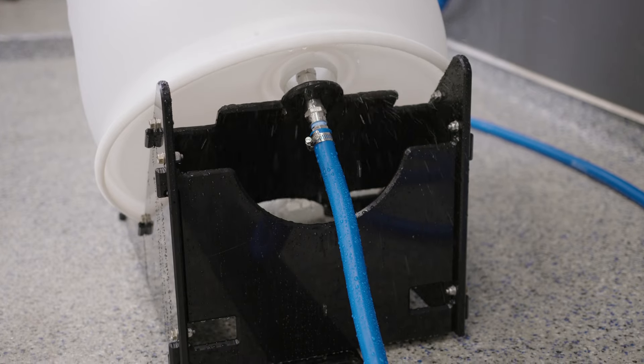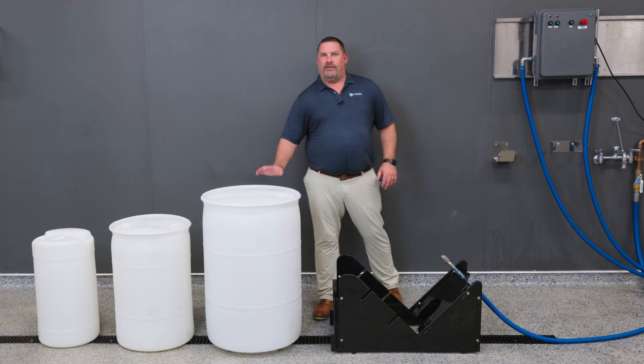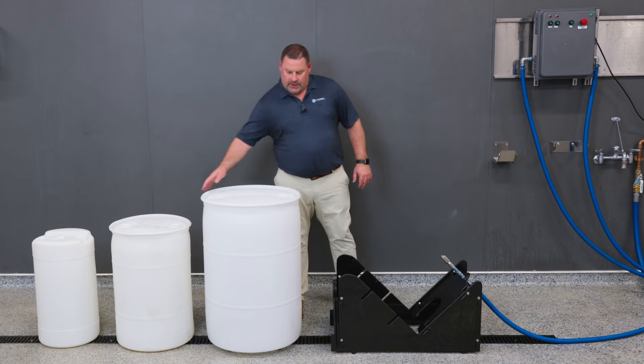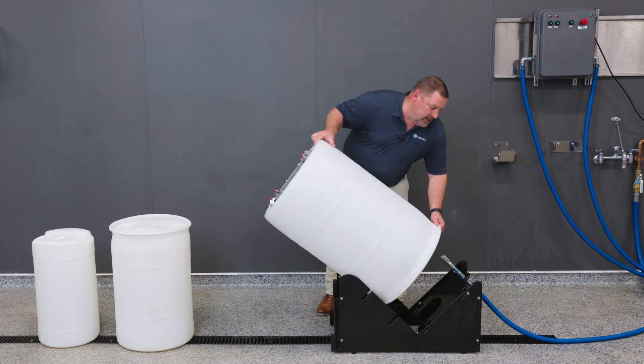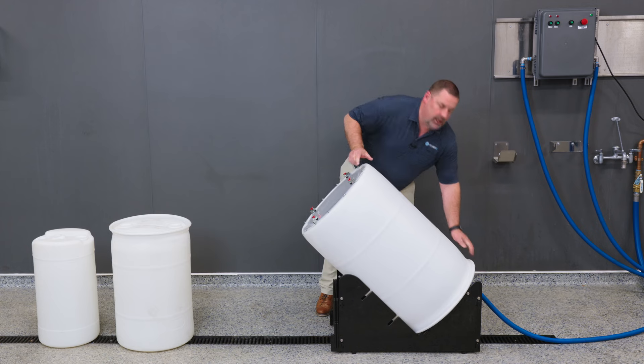Let's take a look at how it works. To operate the system with a 55 gallon drum, move your drum into position. Simply tip, no lifting required, align the nozzle into the top bunk and put in position.